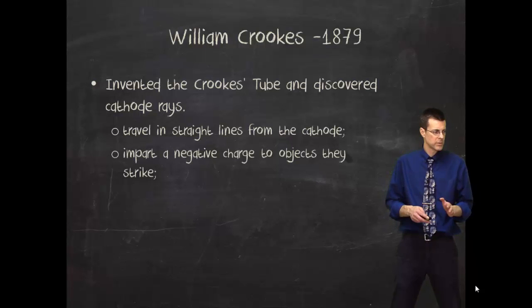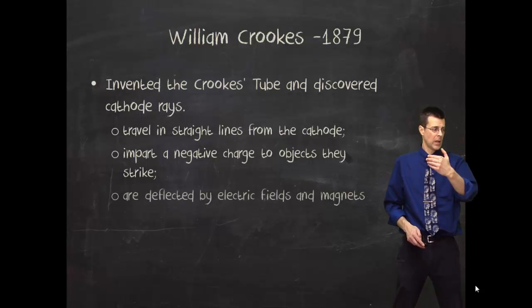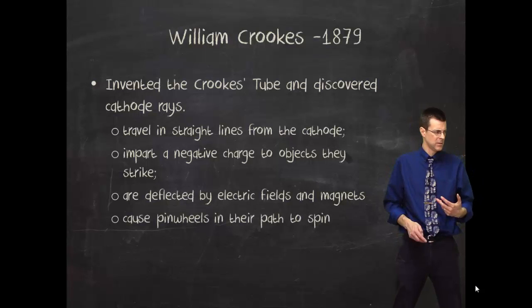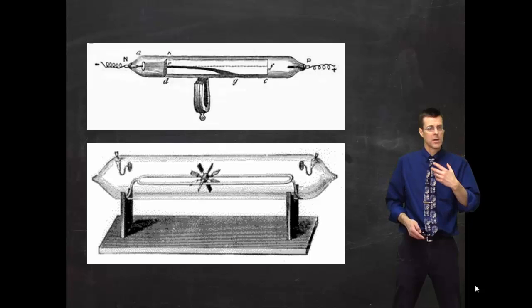But more important than that, they found some of the properties of these cathode rays. And you can see those here. And what that suggested was that the thing that made up the cathode ray had mass, and it had a charge, and that got people thinking. And there's a couple of other pictures of cathode ray tubes, and no, you don't need to write those down.